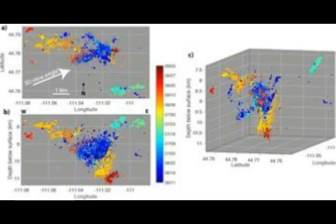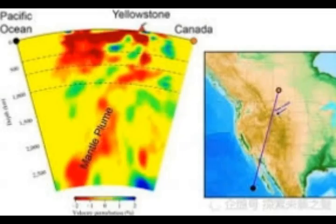Earthquake swarms — sequences of elevated earthquake activity with no clear main shock — are common at Yellowstone and many other places. Swarms occur in a variety of volcanic and tectonic settings.